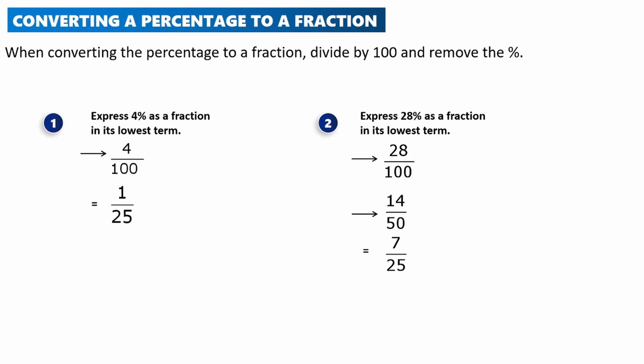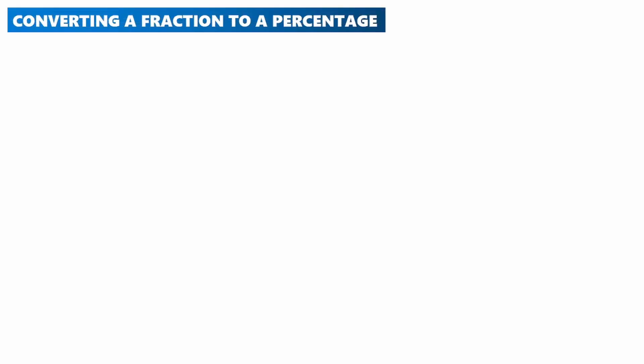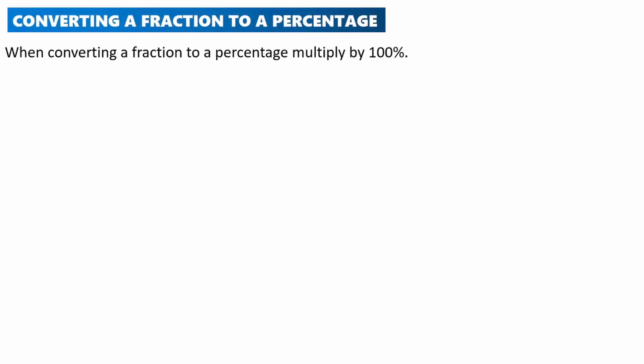Now let's look at how to convert a fraction to a percentage. When converting a fraction to a percentage, we multiply by 100 percent — the opposite operation. For example: express 1 over 2 as a percentage. So 1 over 2 times 100 equals 50, giving us 50 percent.